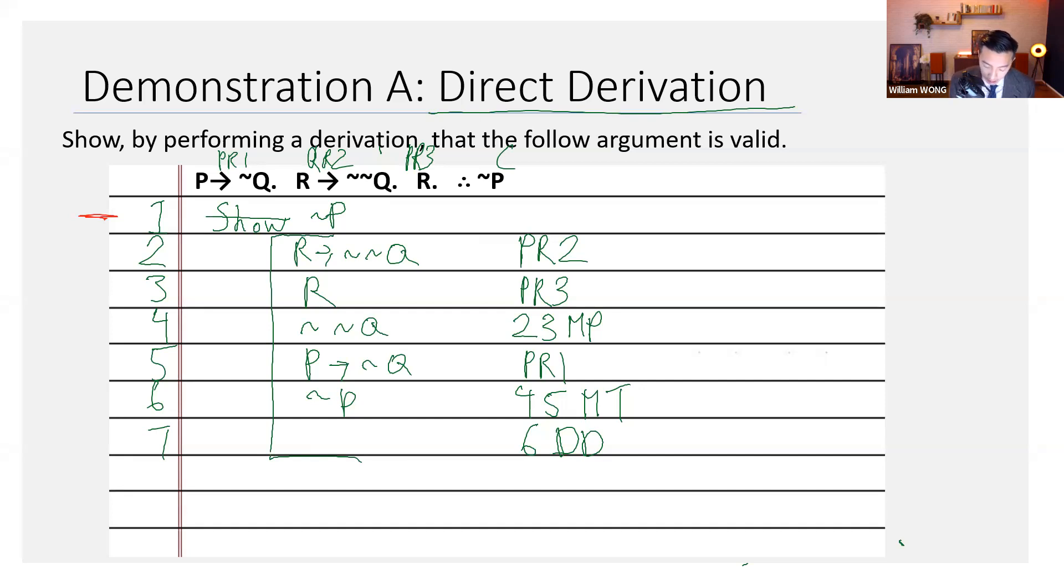Why am I crossing out the show line? Well, prior to crossing it out, you're telling whoever's reading this derivation that you're trying to show not P. But by virtue of writing 6DD, you've actually shown it. So you're no longer showing not P. You have not P.